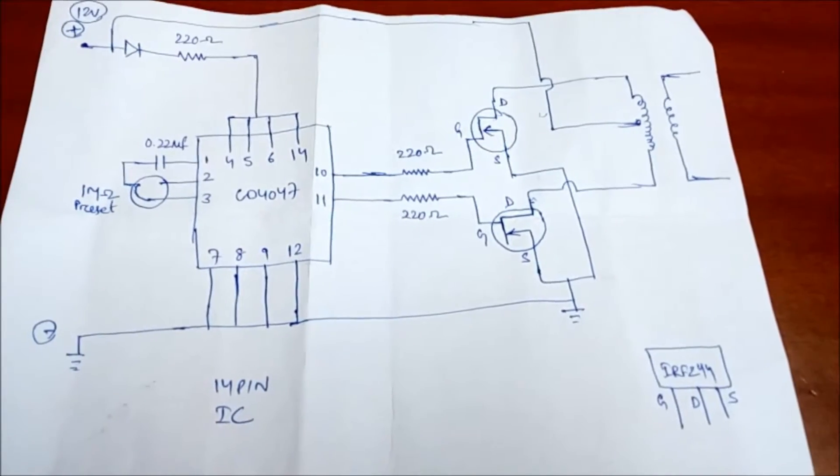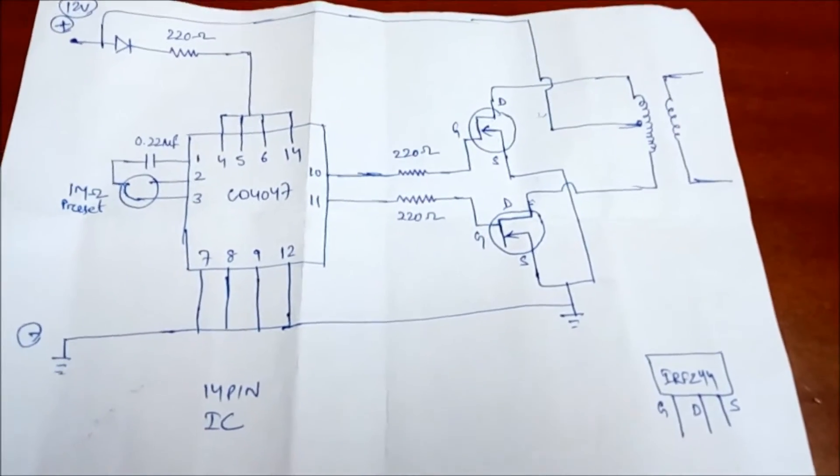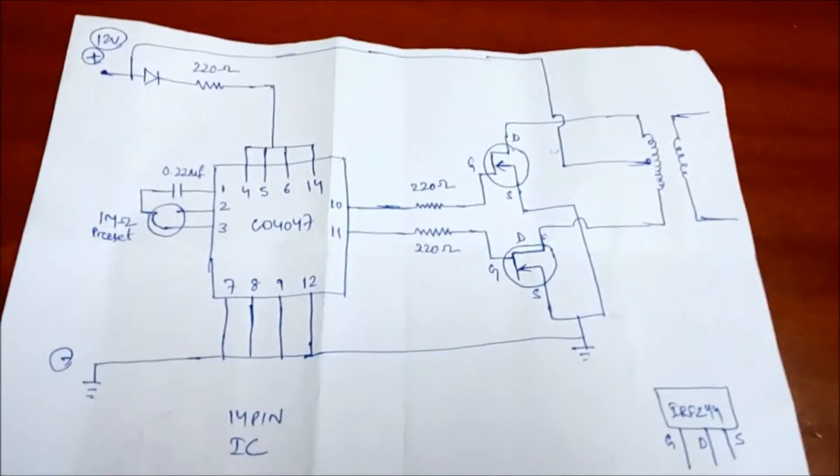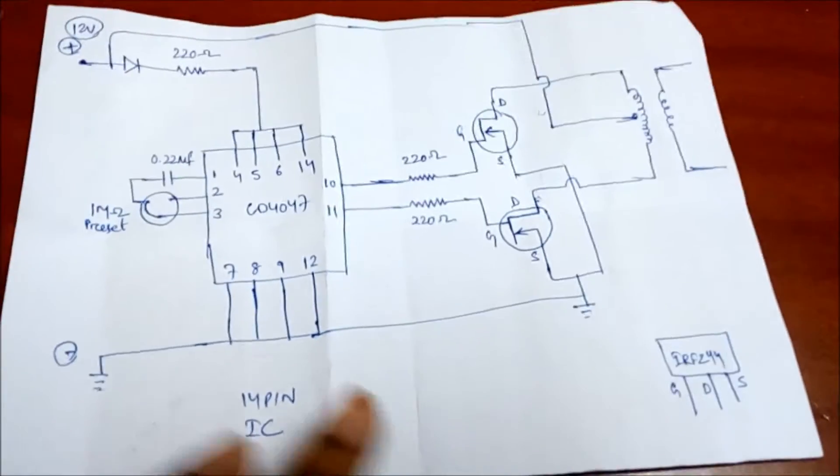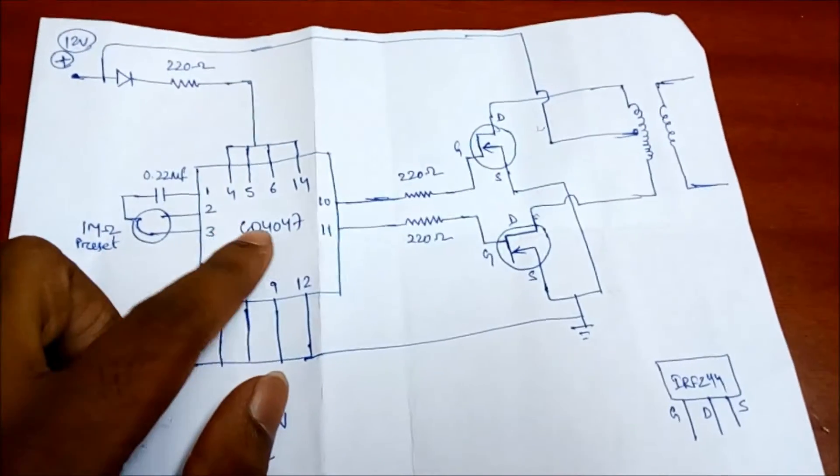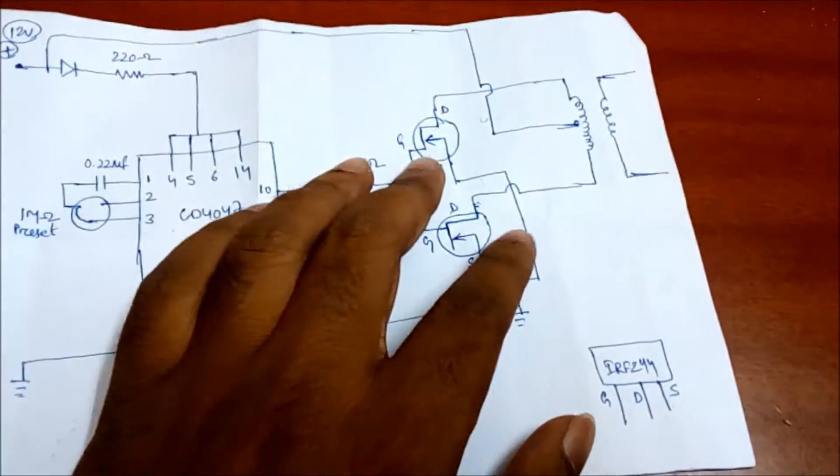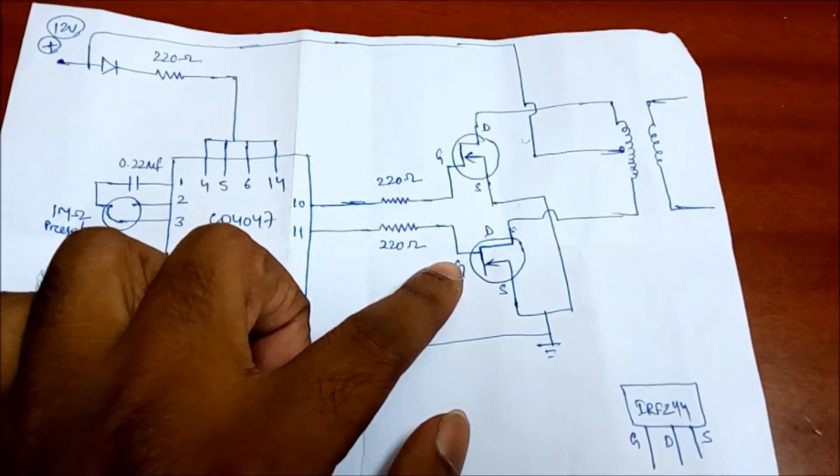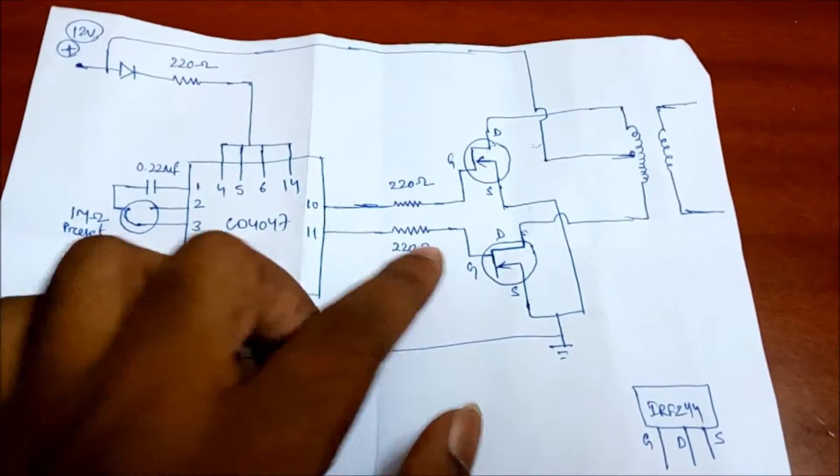Hi friends, today we will discuss how to make an inverter using MOSFET. Here is the circuit diagram of your inverter circuit. I am using a CD4047 IC and using IRFZ44 MOSFET for the inverter circuit.